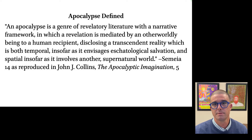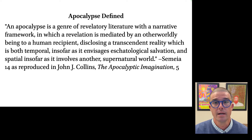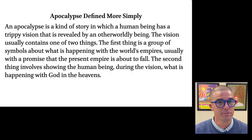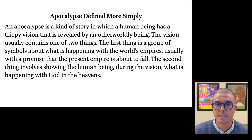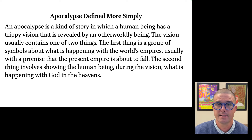The classic definition of an ancient apocalypse comes from John J. Collins. To put this into more basic terms, an apocalypse is a kind of story — a narrative — in which a human being has a trippy vision that's revealed by an otherworldly being, usually an angel. The vision usually contains one of two things: the first is a group of symbols about what's happening with the world's empires, usually with the promise that the present empire is about to fall; the second involves showing the human being, during the vision, what's happening with God in the heavens. Embedded in this definition are a number of features or elements of an apocalypse.